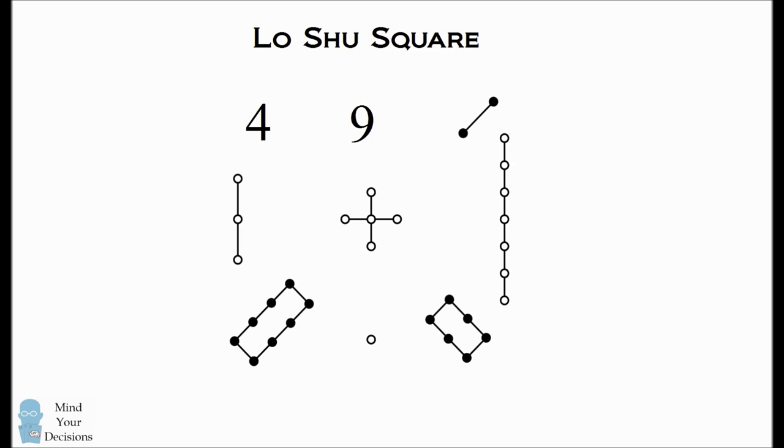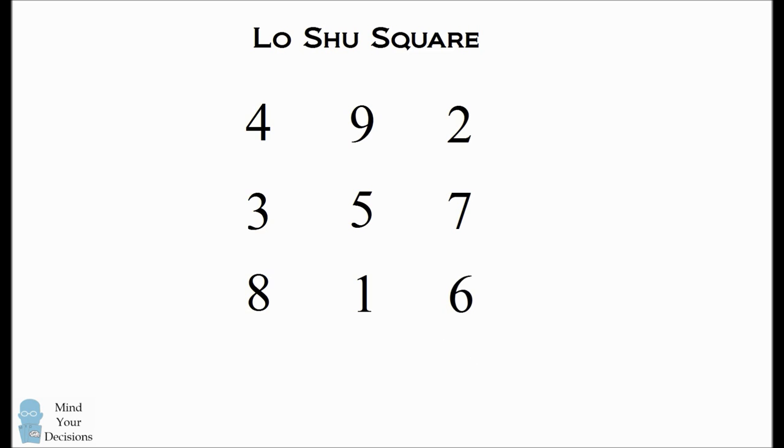If we count the number of dots in each group, we can write the numbers in an array. Now if we add up the numbers in the first row, they add up to 15. The same goes if we add up the numbers in the second row or the third row.